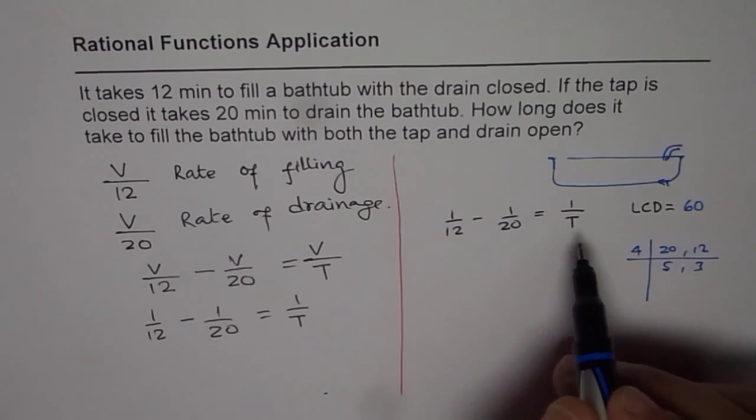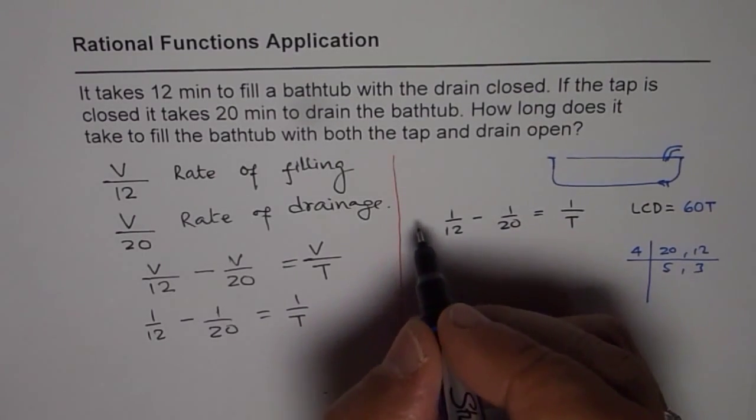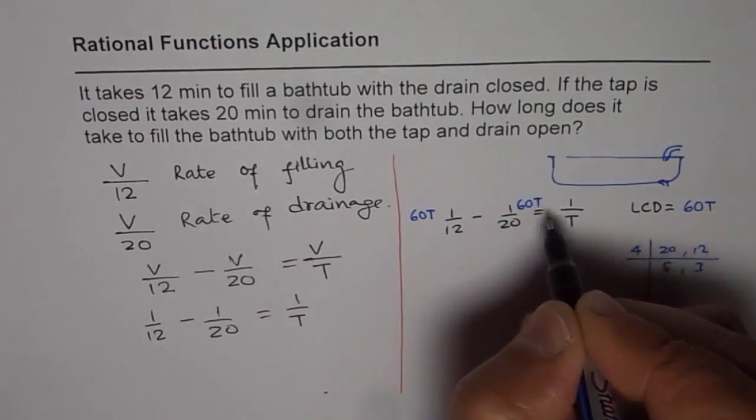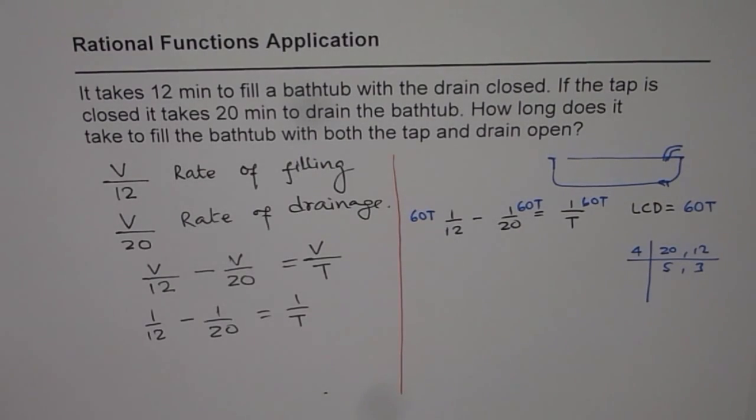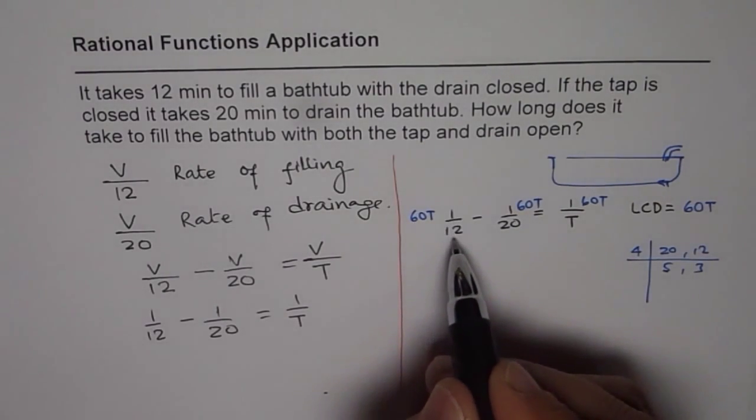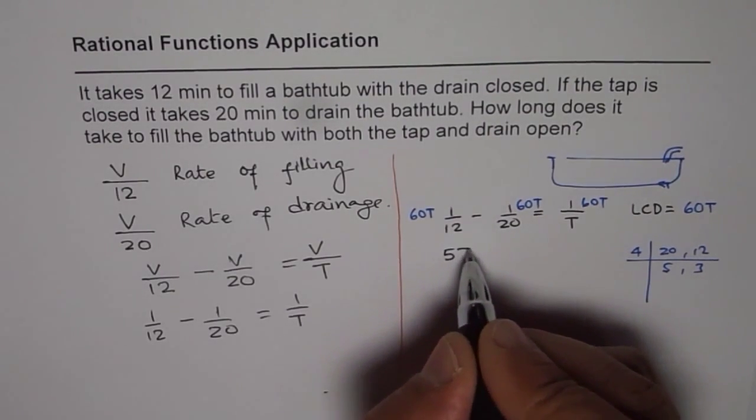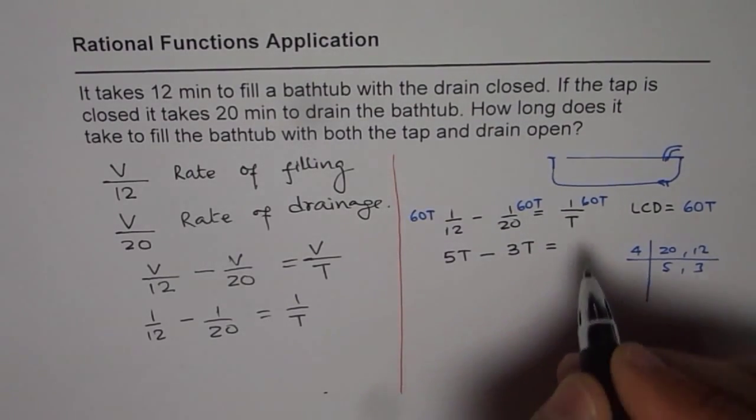So what we will do is, we will multiply everything by 60T, since T is also there. So if you multiply everything by 60T, this also by 60T, this also by 60T, what do you get? So 1 over 12 times 60T, so 12 goes 5 times, so we get 5T minus, this goes 3T equals to 60.